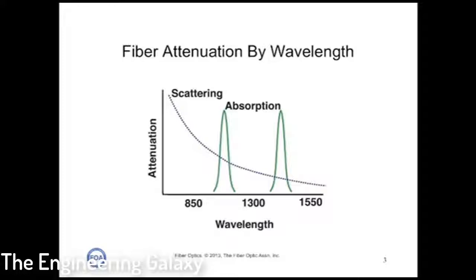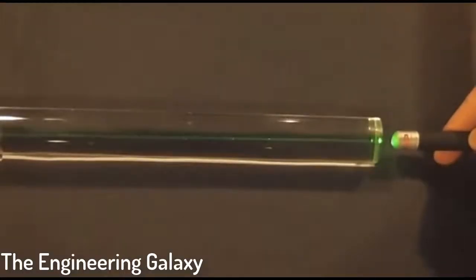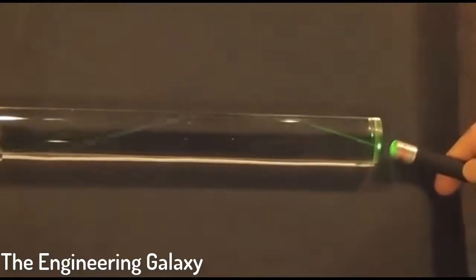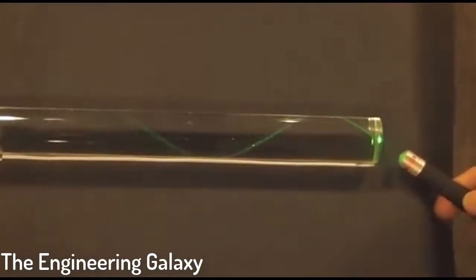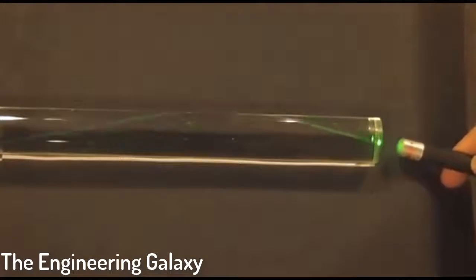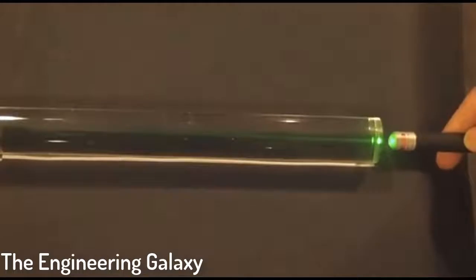We can demonstrate how scattering works very easily with our plastic rod. We can easily see the scattering in the plastic rod, just like it works in an optical fiber. When we shine our beam from the laser pointer down the plastic rod, you can actually see the ray of light as it's traveling down the rod. And what you're actually seeing is the scattering that occurs as the ray of light travels down the plastic. This is exactly the mechanism that causes loss in an optical fiber.